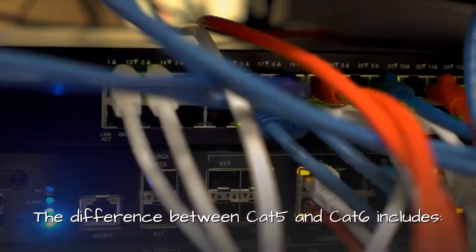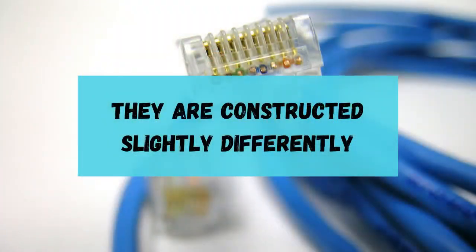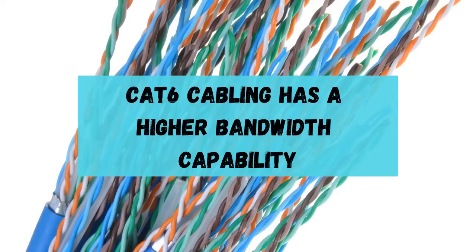The difference between CAT5 and CAT6 includes: they are constructed slightly differently, CAT6 cabling has a higher bandwidth capability.